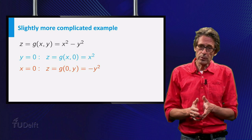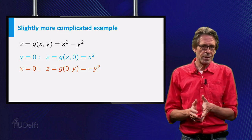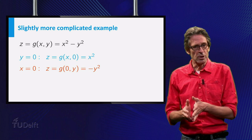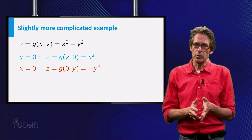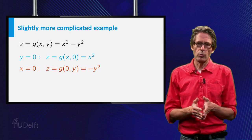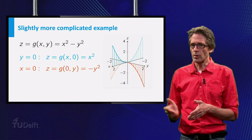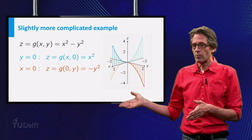Likewise, for x equal to zero, on the y-axis, g becomes g(0, y), and this equals minus y squared. This obviously takes on a maximum value of zero, for y equal to zero. The graph shows the two parabolas.